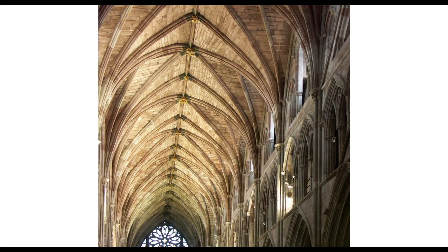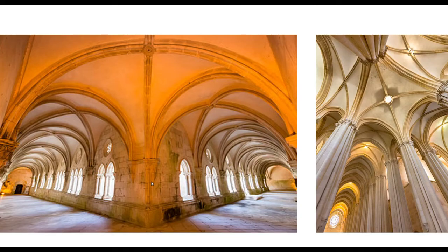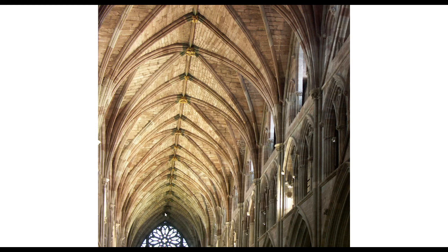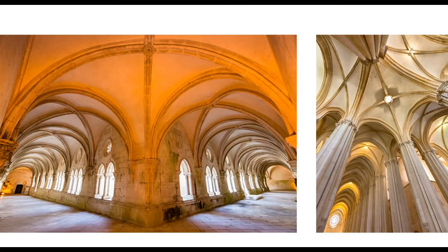One difference to note: a rib vault can also be a pointed arch vault, because technically the pointed arch vault is a kind of rib vault. This is an example of a rib vault in real life — semi-circular arches that meet at a point — and then the pointed arch vault, where the arches are pointed and then meet. The difference is simply how the arches go from one end to another: semi-circular versus pointed.